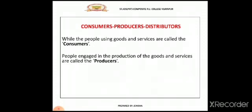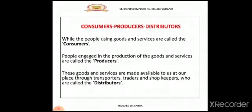Next, producers. Producers are those who are engaged in the production of goods and services, or producers make the goods and services that are sold in the economy. The best example for producers are business firms. Next, distributors. Who are distributors? Distributors are those who make available all the goods and services produced by the producers at our place, by way of transporters, traders and shopkeepers. So, they are called distributors. Thus, consumers, producers and distributors — these three are also linked with the market, and this we also use in our daily life.